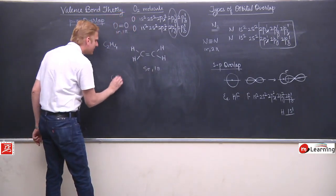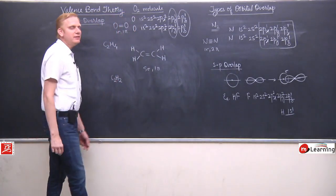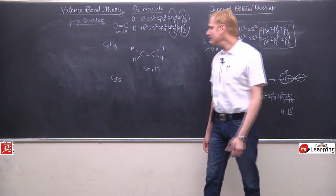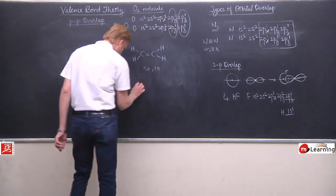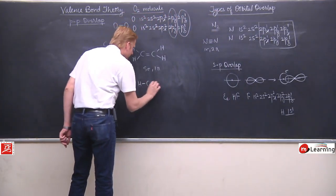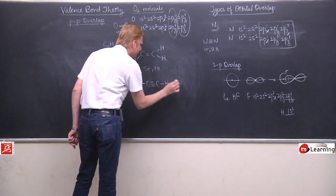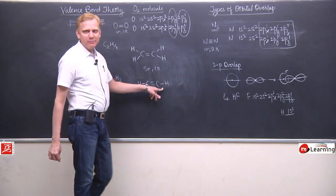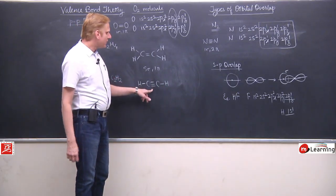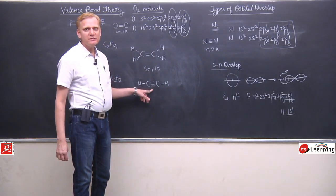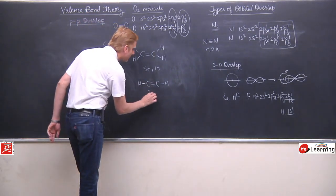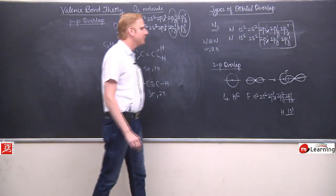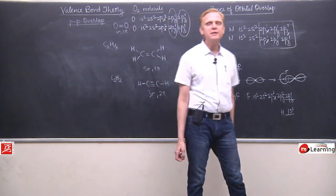Similarly, we can have the example of ethyne, which is also called as acetylene. Acetylene has this kind of bonding. Once again, single bonds are always sigma. Triple bond has one sigma and two pi bonds. So the total number of sigma bonds in the molecule will be three and the total number of pi bonds is two — three sigma, two pi.